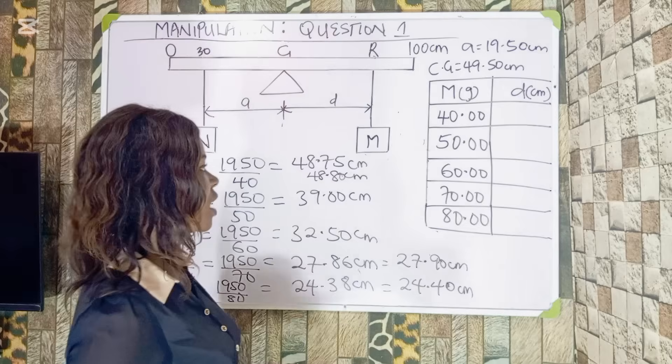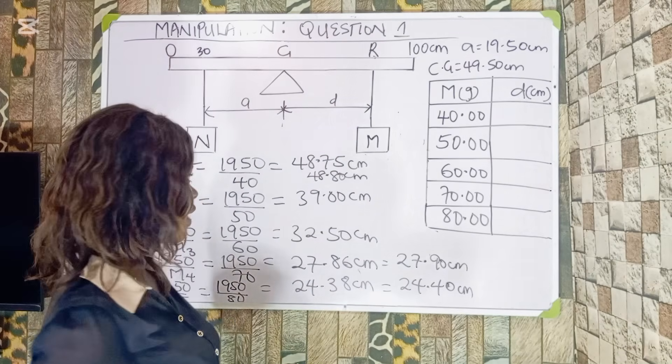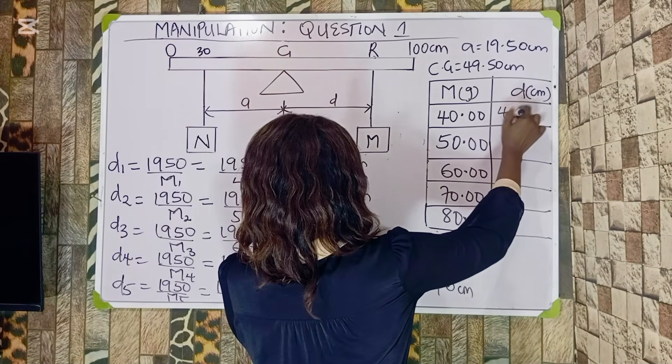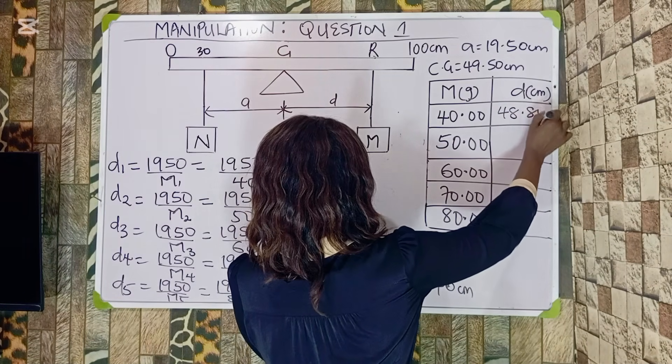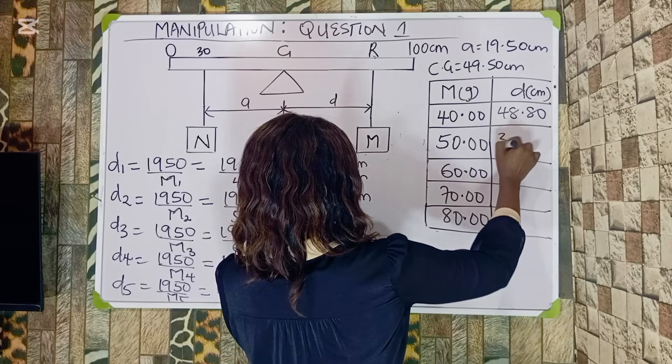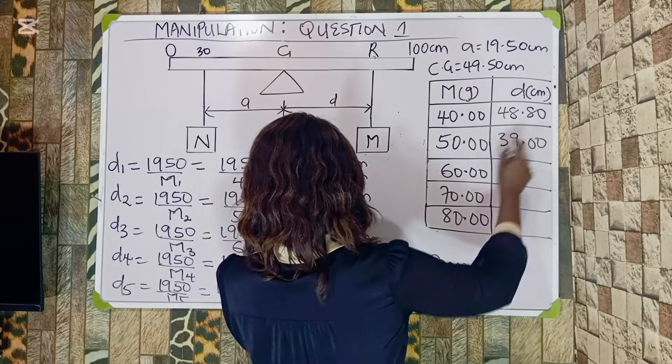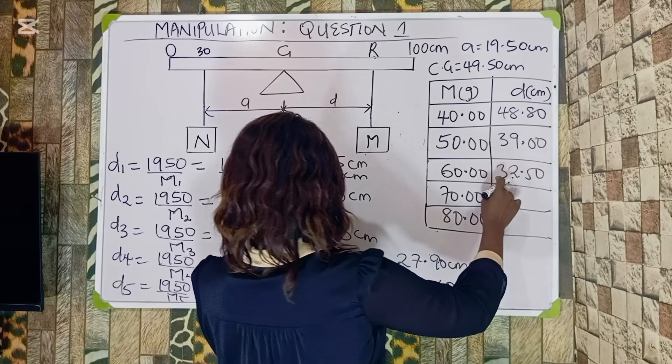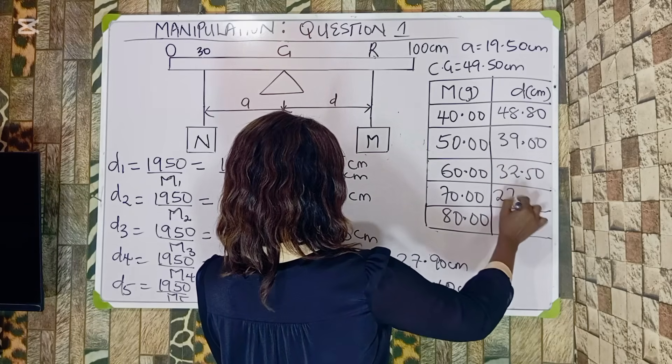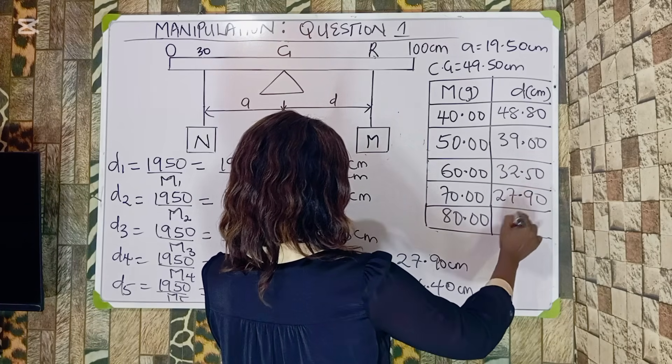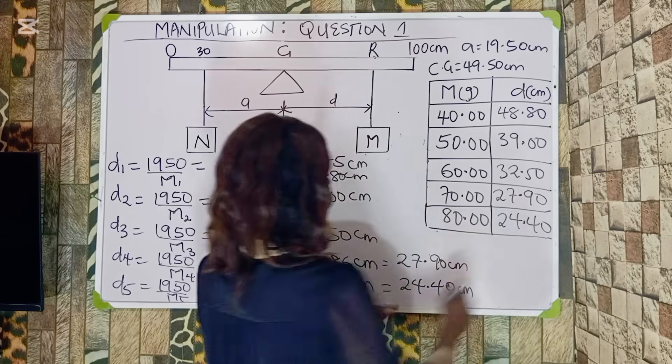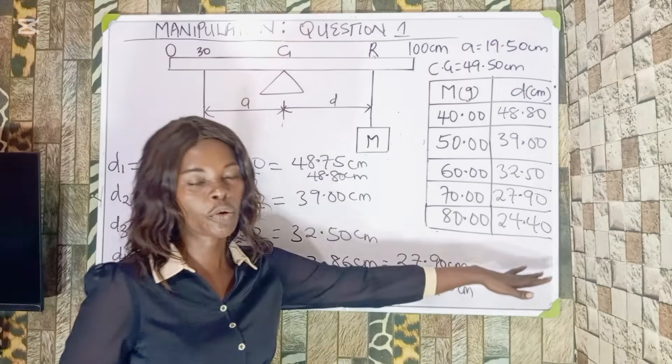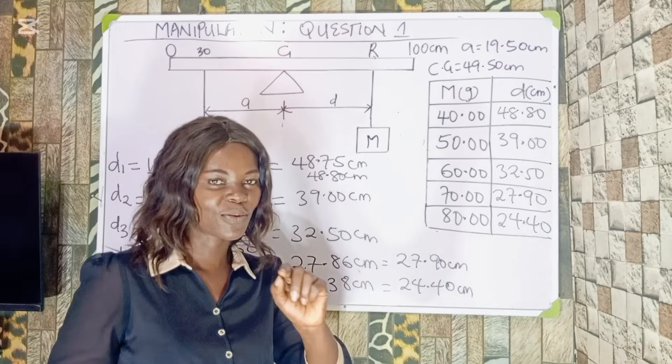That is what I am going to record in your table of values. Let's go. For this one, my D becomes 48.80. This is 39.00. This is 32.50. This is 27.90. And this is 24.40. You can see it now. So with this, you have gotten your readings. Quite simple.